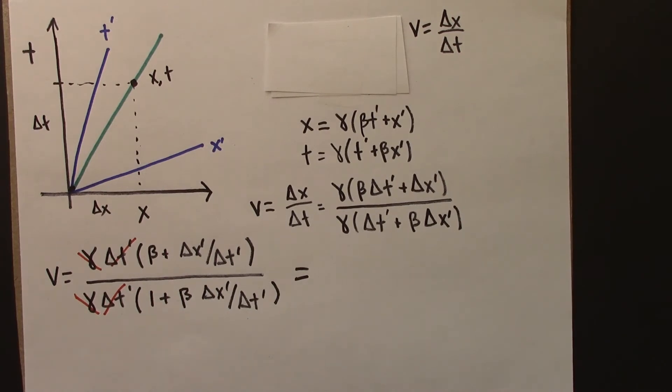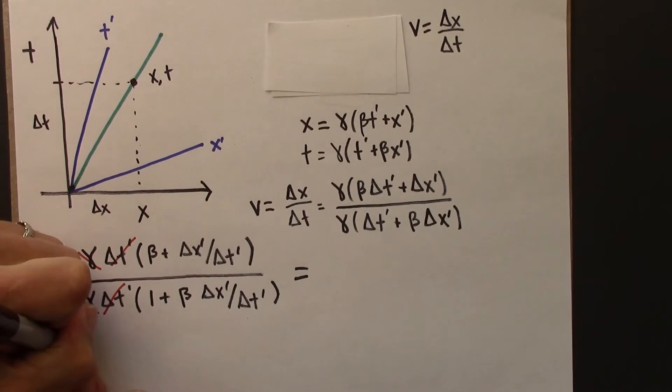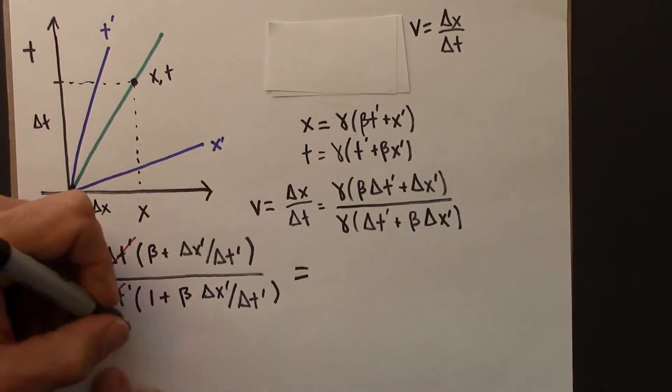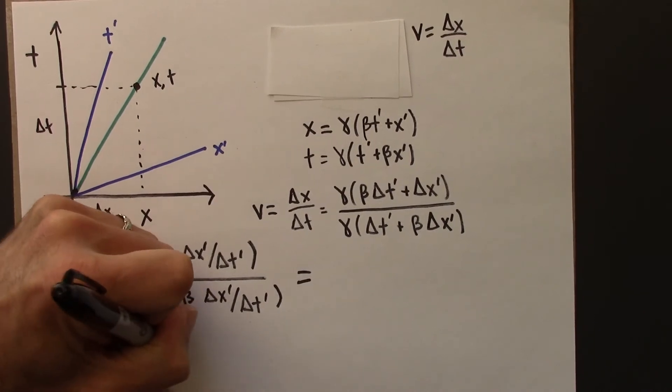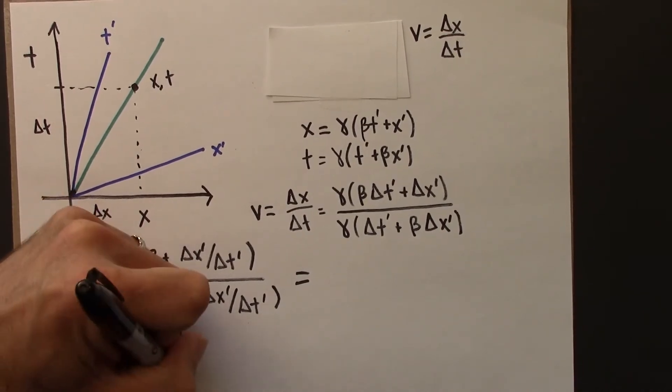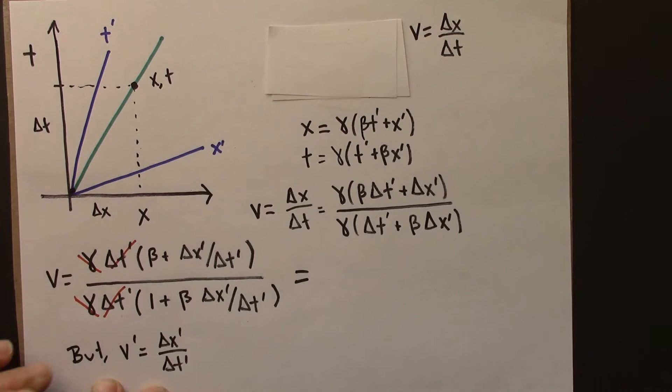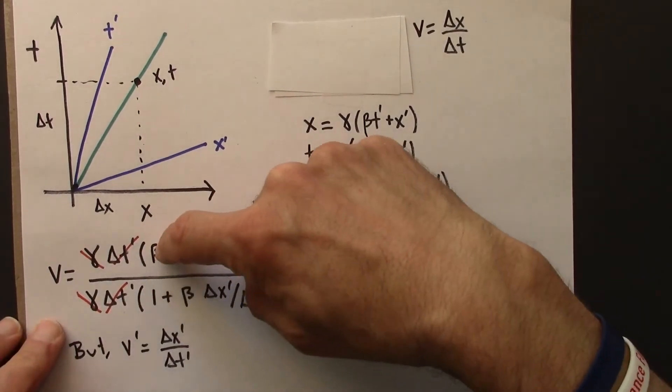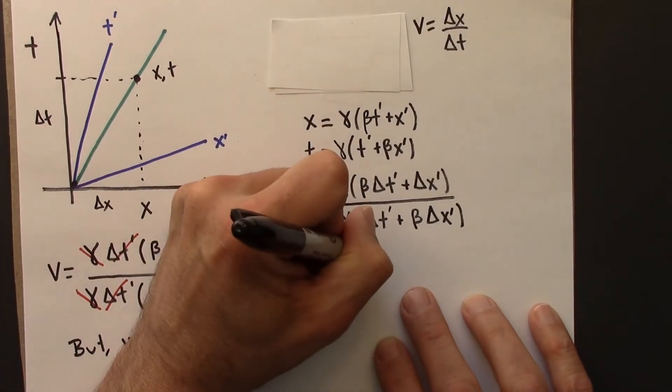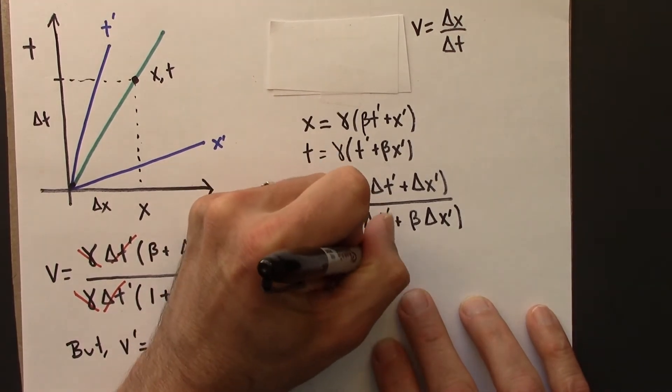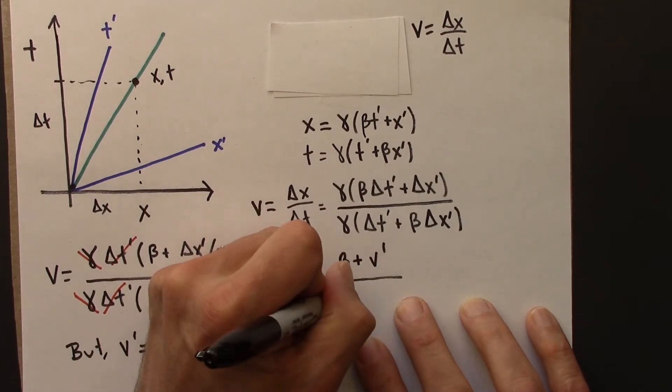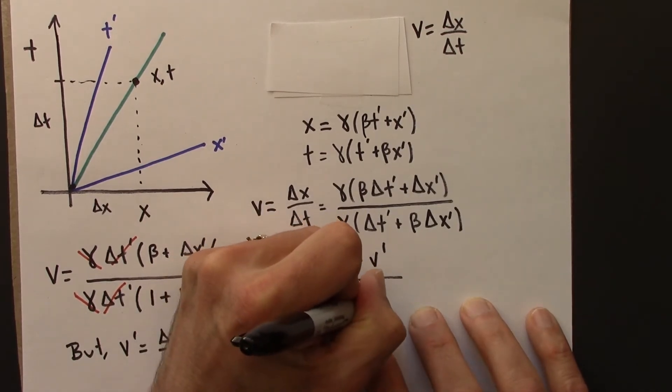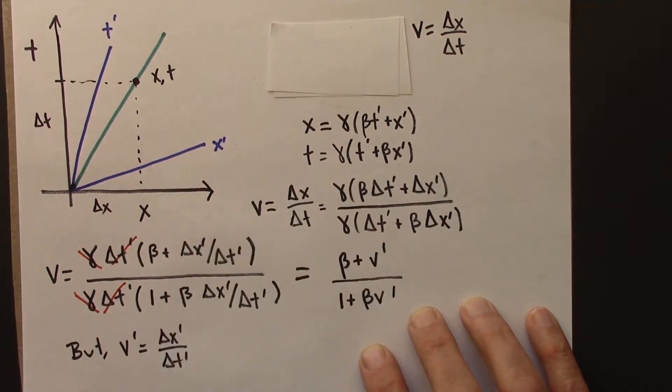So this takes a particularly nice form. So I'm going to say, let's see. But, or hey, notice that, v prime is delta x prime over delta t prime. So that tells me that this is just beta plus v prime over 1 plus beta v prime.